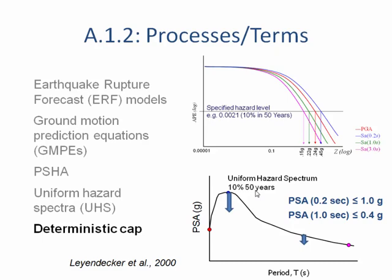We also have the concept of a deterministic cap in the western United States in ASCE 7. The deterministic cap considers all active faults capable of producing ground motions, looks at what maximum ground motion they can produce, and the code limits it to mean plus one standard deviation — the 84th percentile ground motion. If the probabilistic hazard spectrum shows it's higher, we can drop it down to that deterministic level.